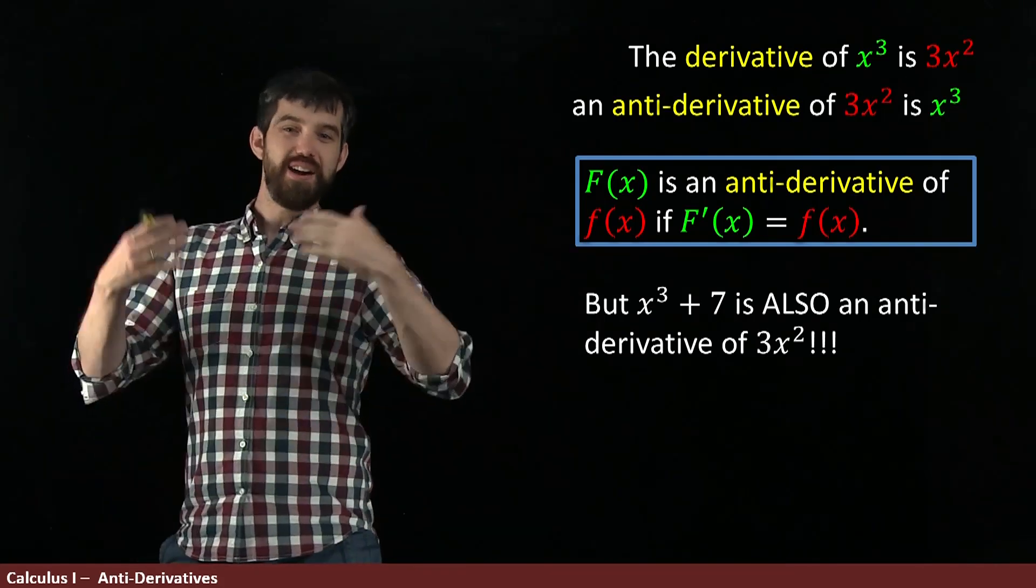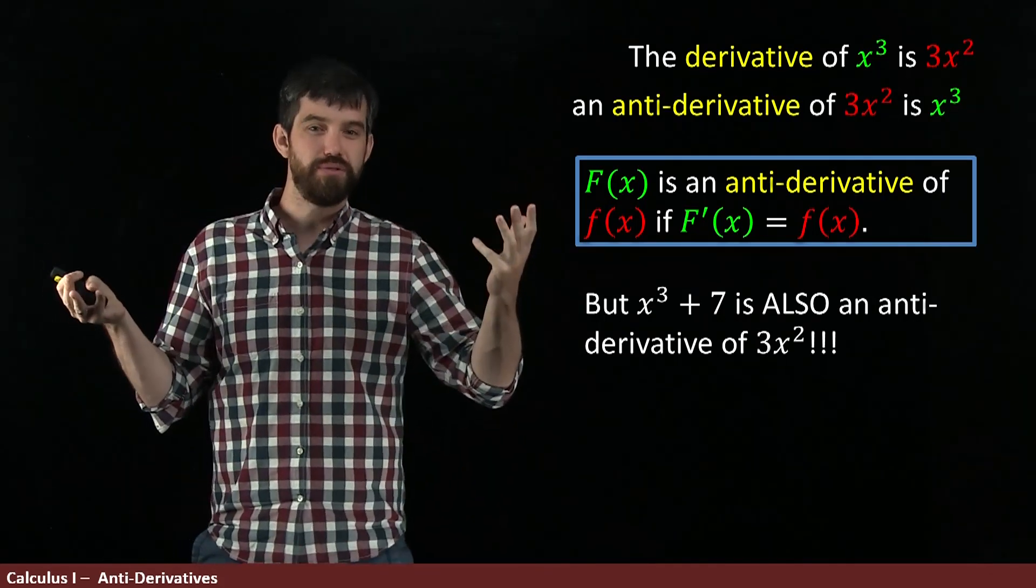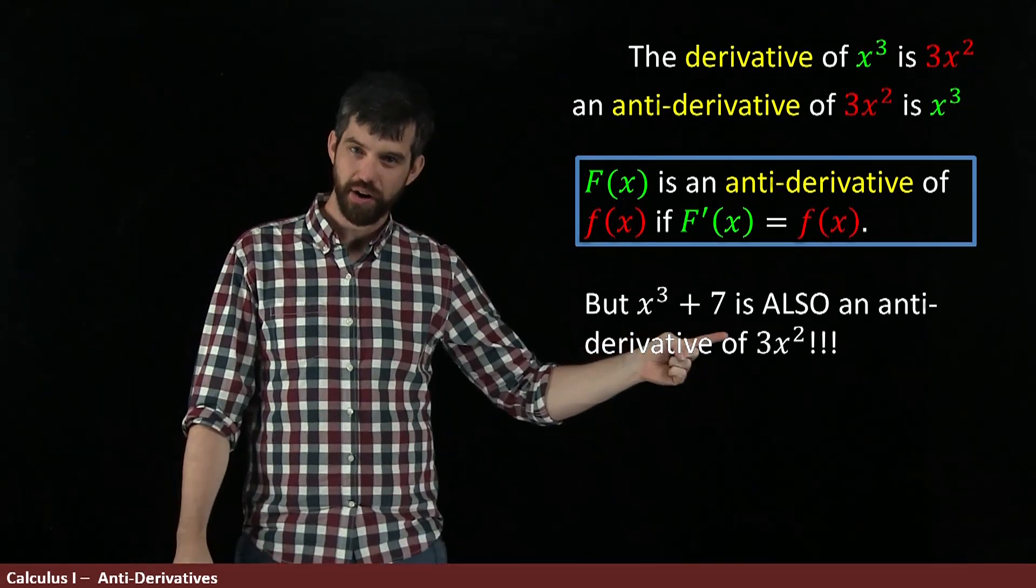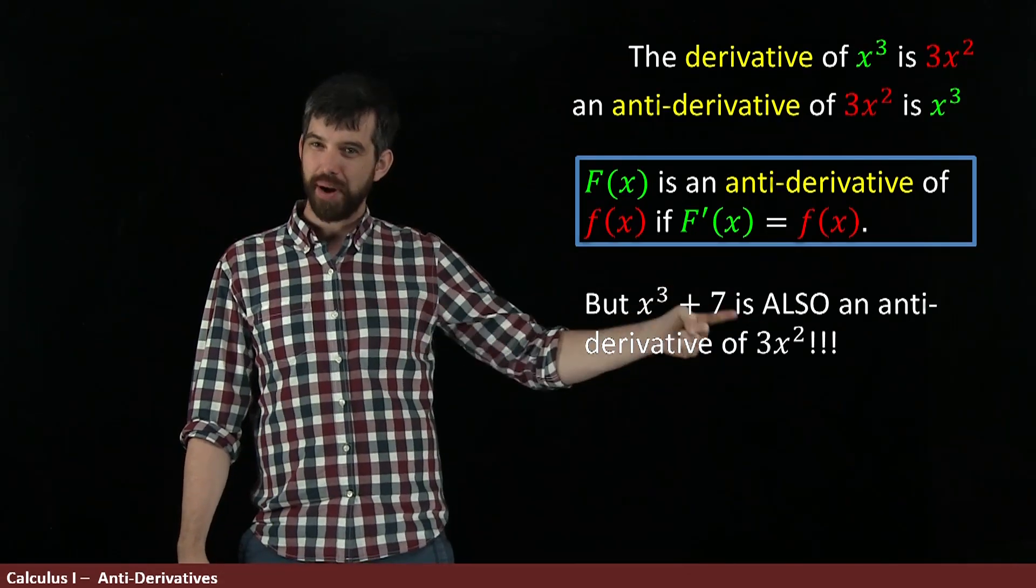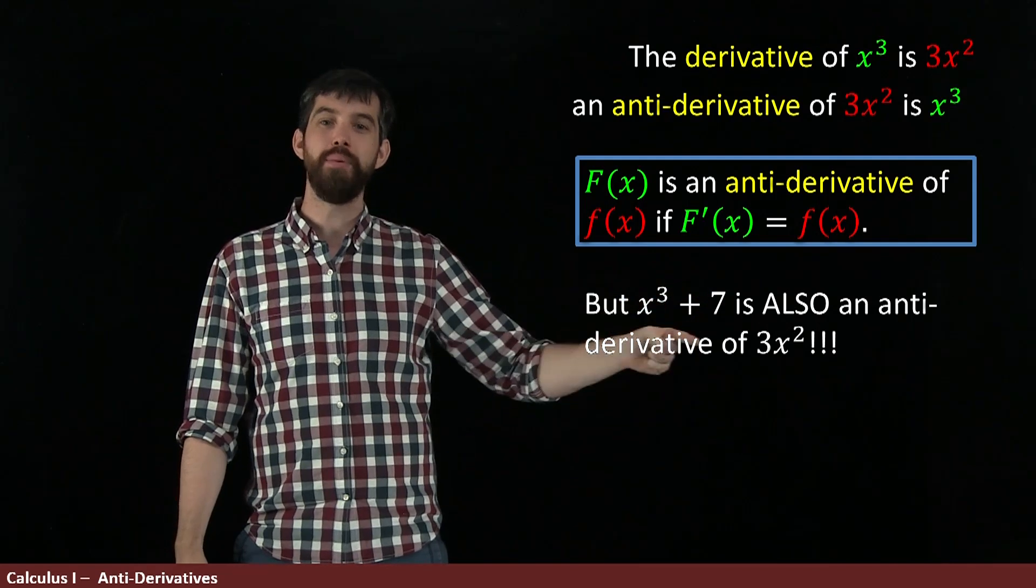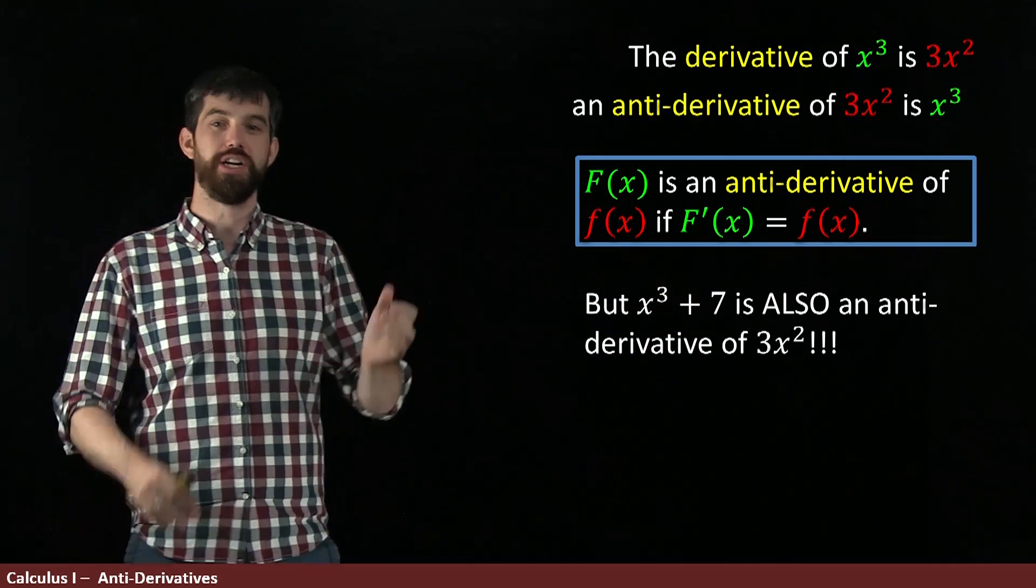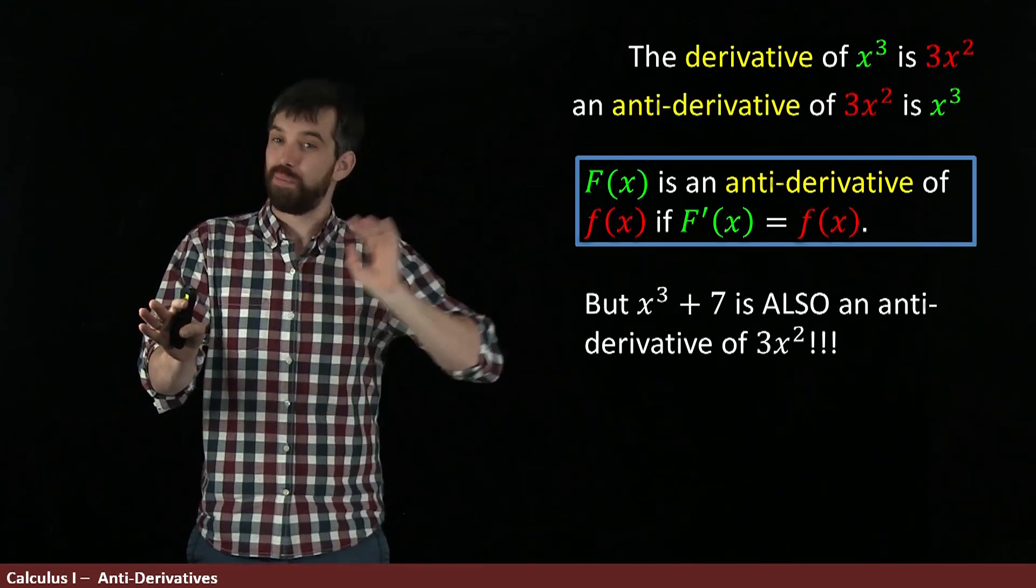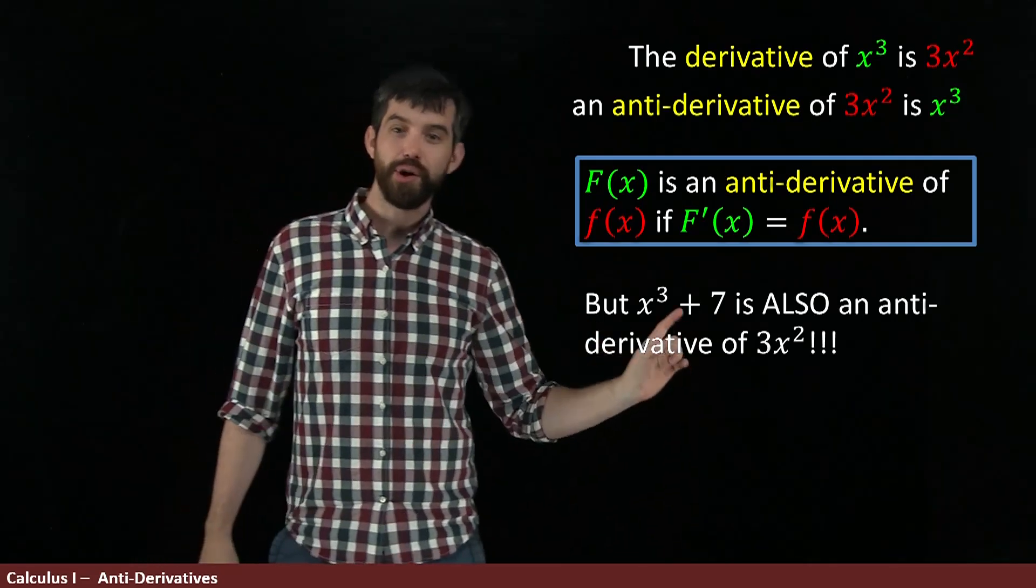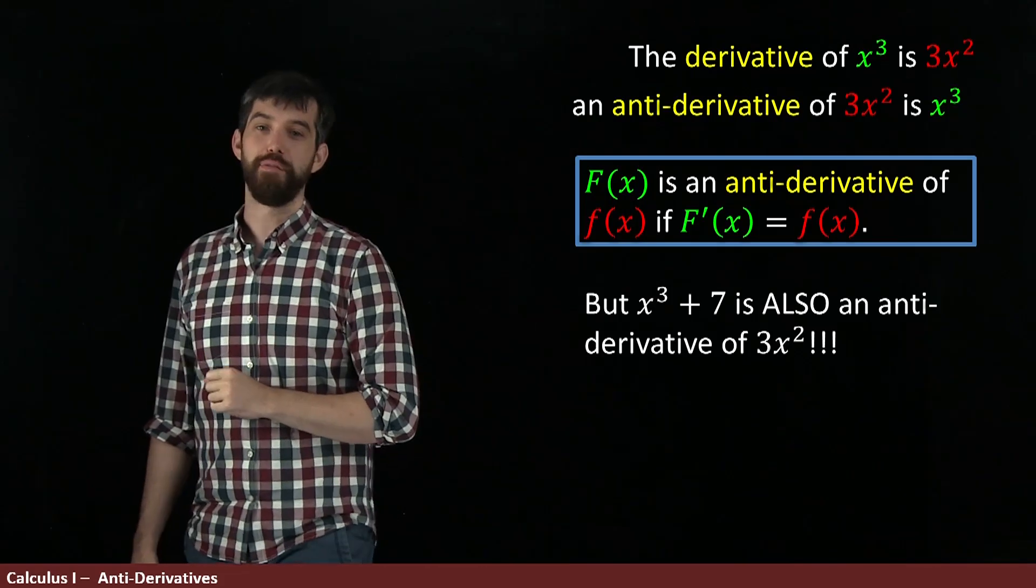Likewise, if I added a million or a billion or e to the pi to the root 2, it doesn't matter what I add here. Any constant that I might choose to add is always going to go away when I differentiate. So that entire infinite family of functions x cubed plus any constant, they're all antiderivatives of 3x squared.